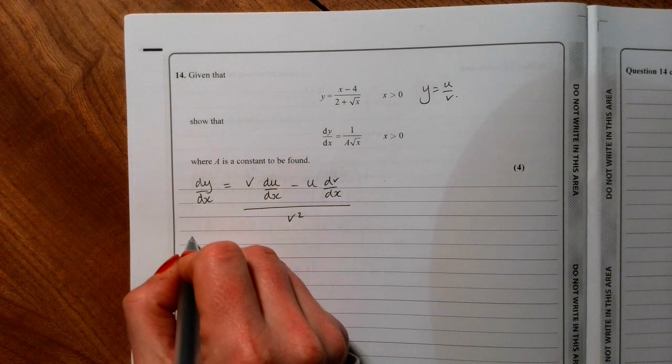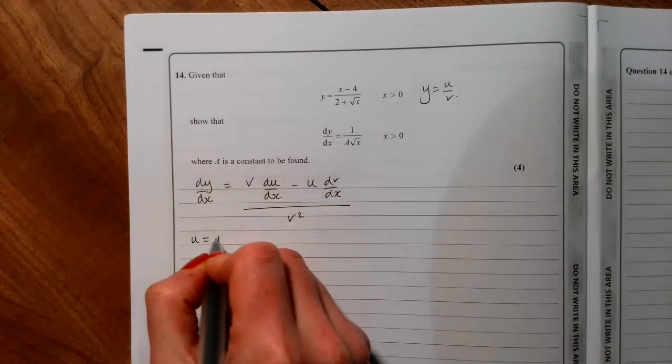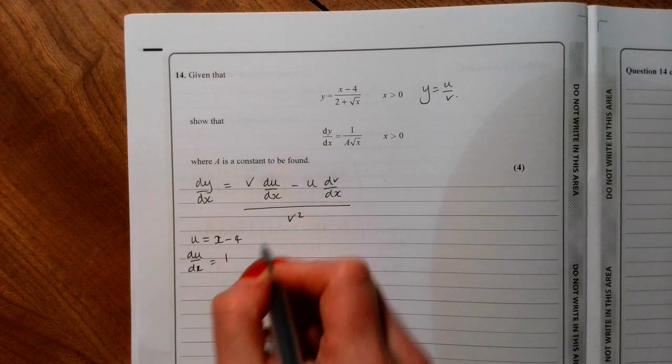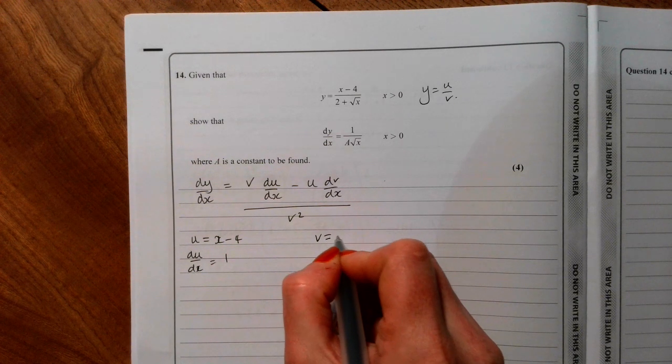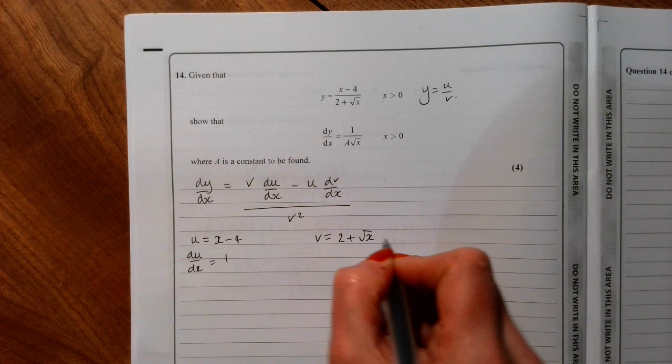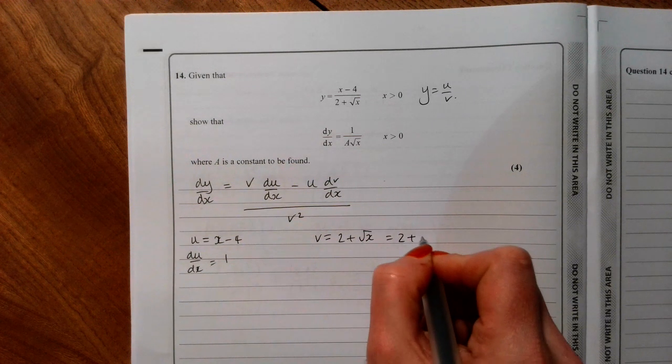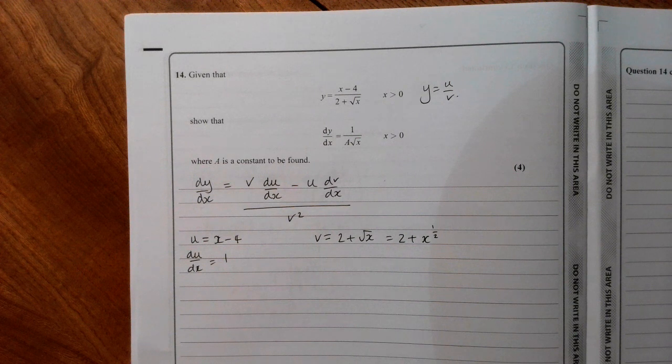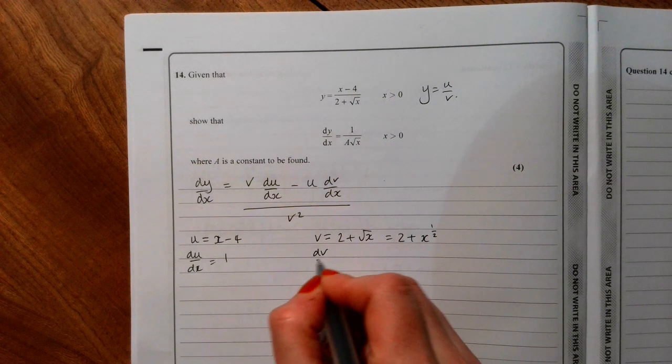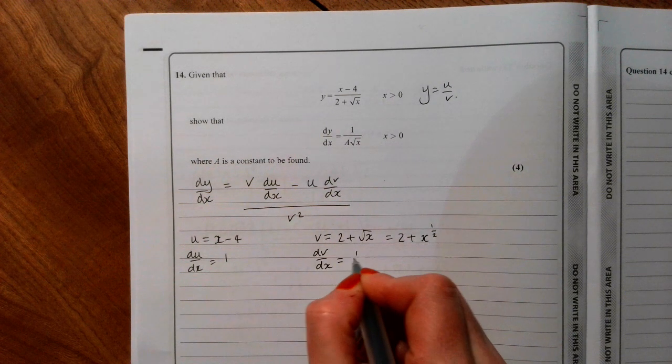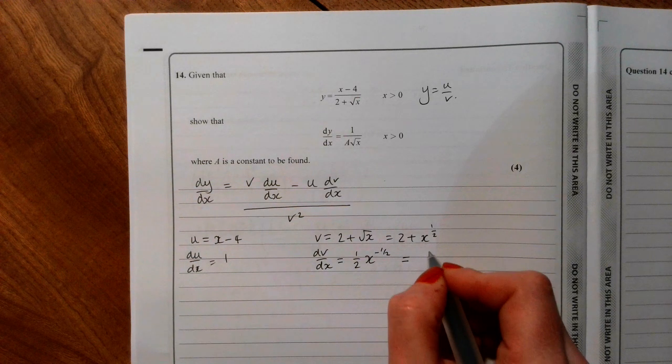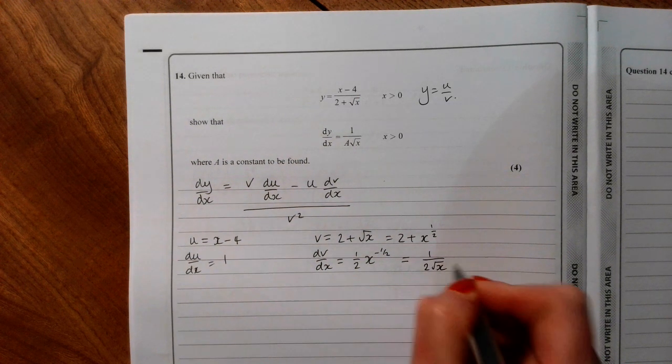So for ours, u is x minus 4, so du by dx is 1. v is 2 plus root x, which you may prefer to write as 2 plus x to the half to differentiate it, and then dv by dx is 1 half x to the minus 1 half, which might be useful later to have as that.